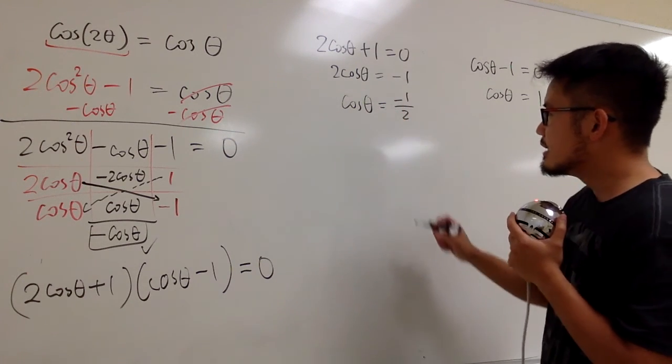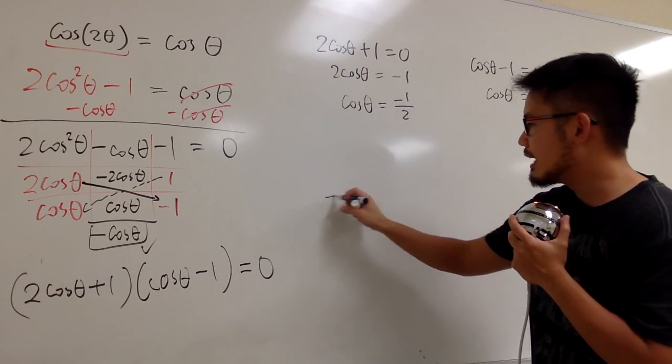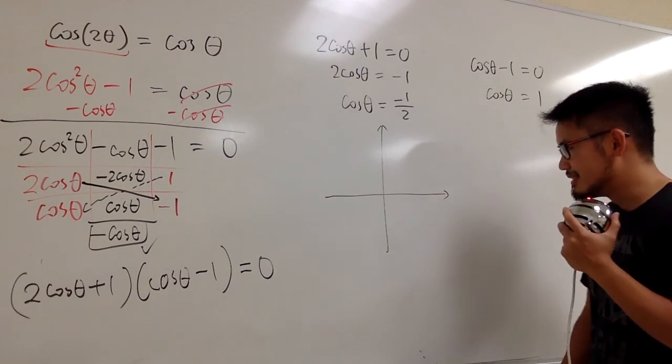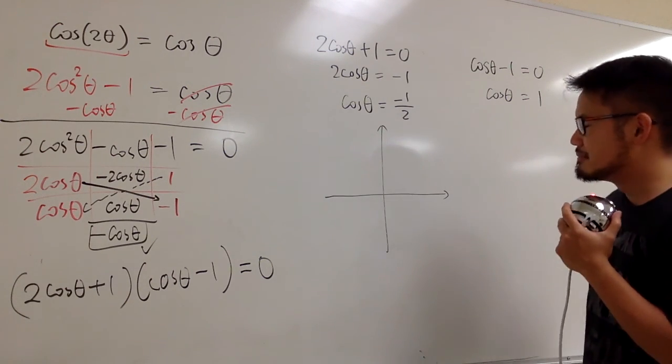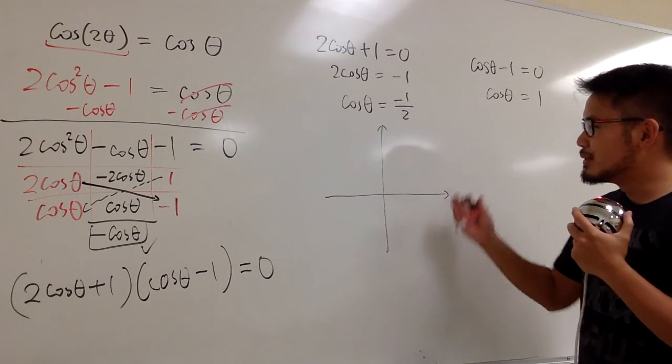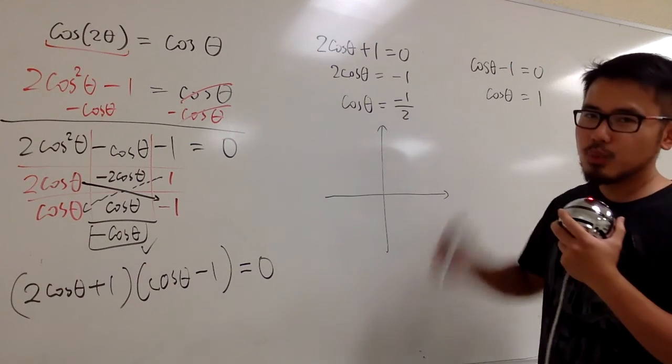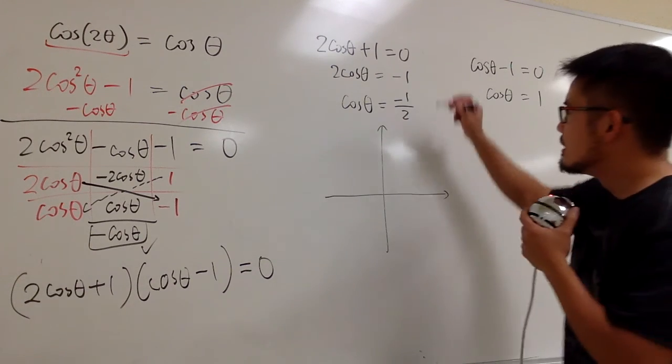Or, I will recommend you to do it this way, so you can figure out the answer carefully and correctly. So, cosine θ is equal to negative 1 half. I will utilize the x and y coordinate plane again.